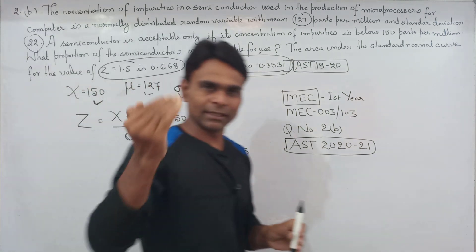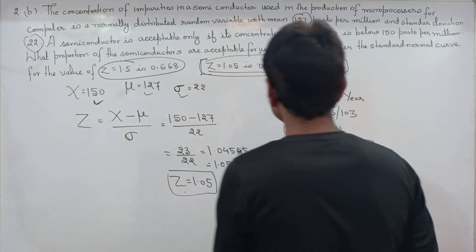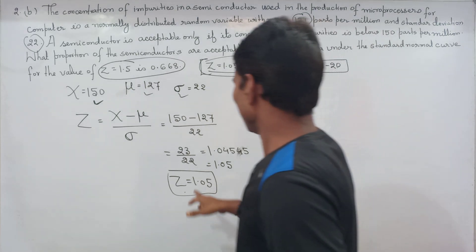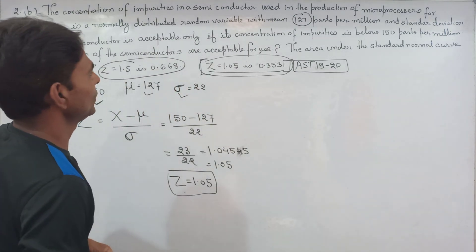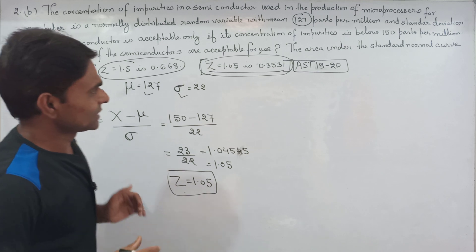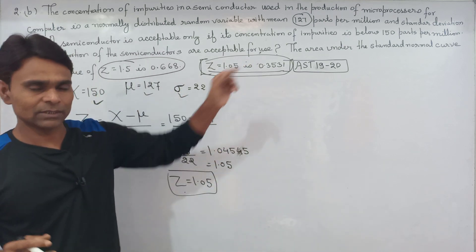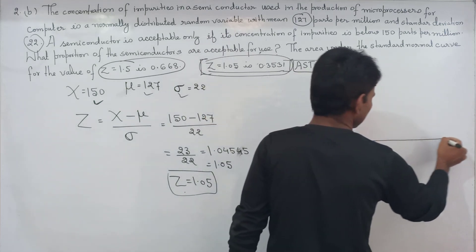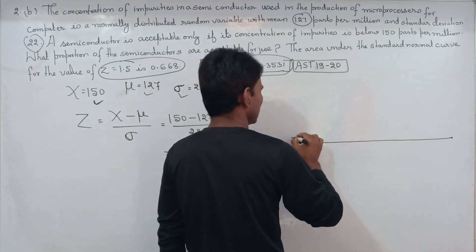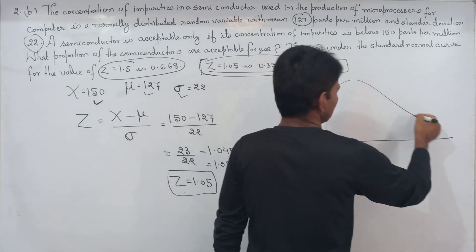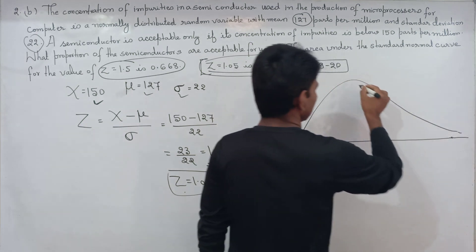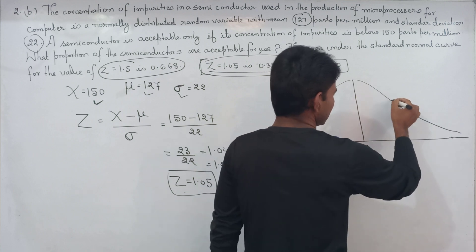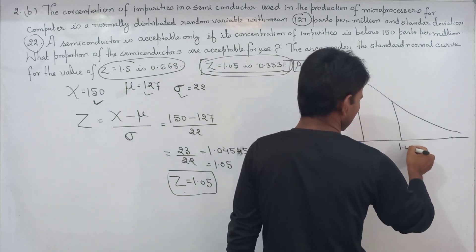So after calculation, the Z value comes out to be 1.05. This means the concentration of impurities given in the question is below 150 parts per million. Now we draw a standard normal curve with mu at the center and Z equal to 1.05 marked on the right side.